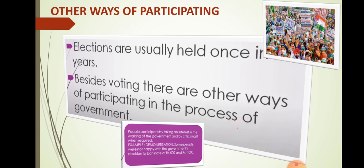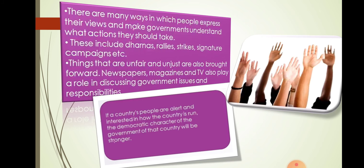For example, demonetization: some people were not happy with the government's decision to ban notes of Rs. 500 and Rs. 1000. There are many ways in which people express their views and make the government understand what actions they should take. These include dharnas, rallies, strikes, signature campaigns, etc. Things that are unfair and unjust are also brought forward. Newspapers, magazines, and TV also play a role in discussing government issues and responsibilities. If a country's people are alert and interested in how the country is run, the democratic character of the government of that country will be stronger.